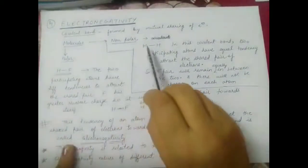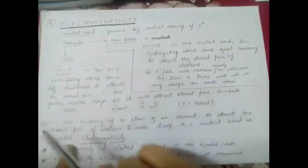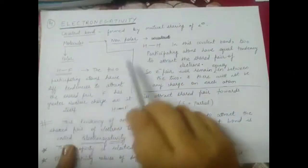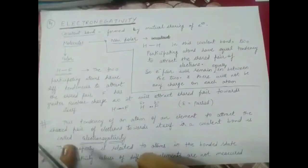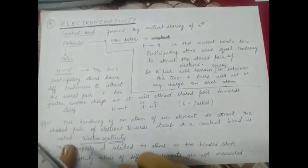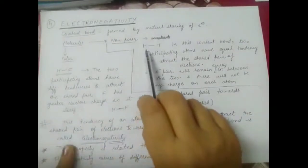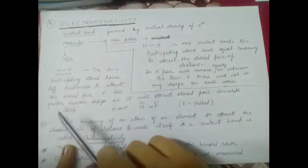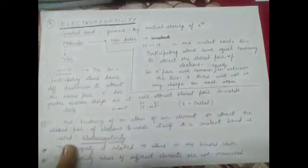As a result, there is no charge on either atom, which means no polarity. Polarity means poles, and poles means charges. Molecules with no charge on them are called non-polar molecules — no plus or minus charge is present.